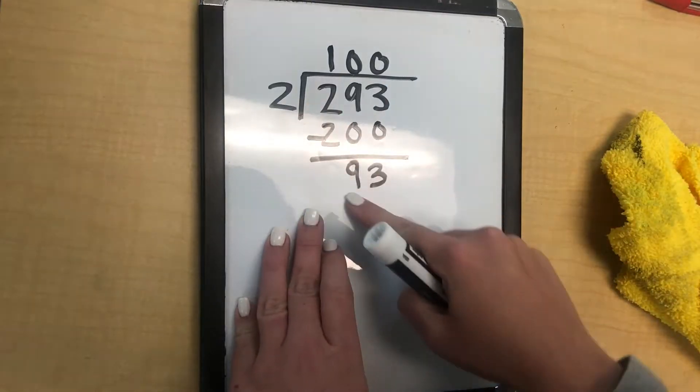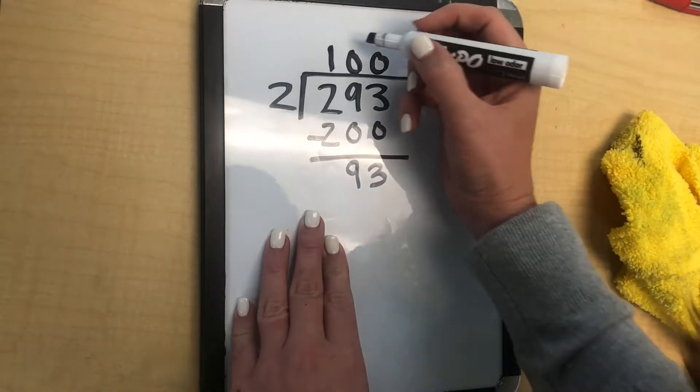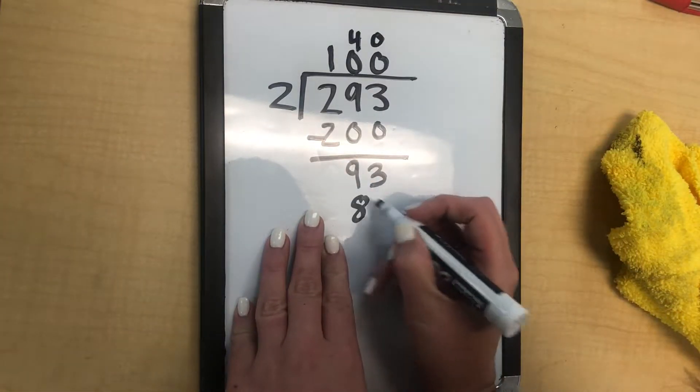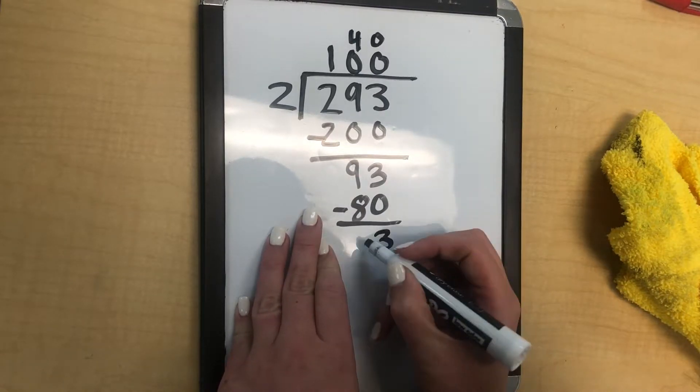Then you go down and you say, what times 2 is close to 90? So 2 times 40 would give us 80. Subtract, 13.